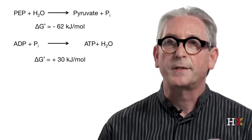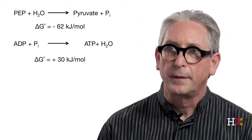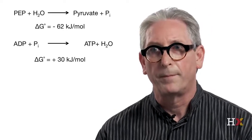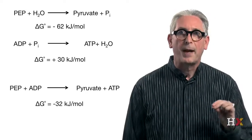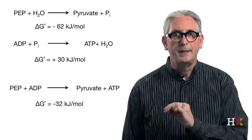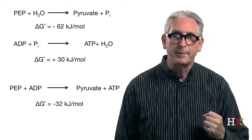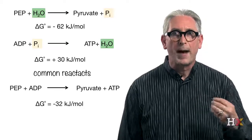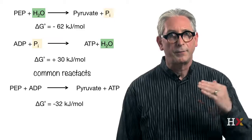In contrast, the synthesis of ATP from ADP plus inorganic phosphate is unfavorable because its change of free energy is positive: plus 30 kJ per mole. However, if we combine these two reactions into a single reaction where phosphoenolpyruvate reacts with ADP to form pyruvate and ATP, these two reactions share a common reactant. So that's why we can combine them. The change of free energy for this combined reaction is negative because it is the sum of the change of free energy from the two reactions.